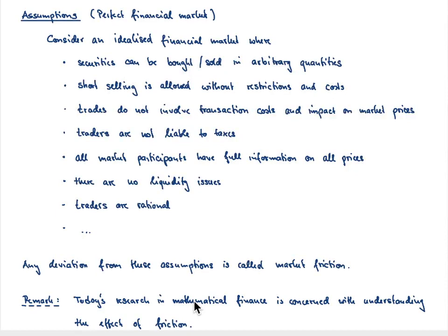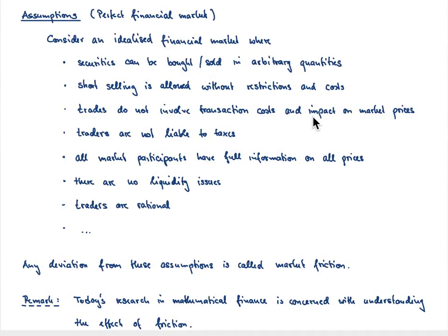How should that perfect financial market look like? First of all, we would like to trade financial securities in arbitrary quantities. Second, short selling in that perfect financial market is allowed, and with that there are no costs associated. Moreover, we neglect transaction costs and taxes, and we also neglect the fact that our trades may have an impact on market price.